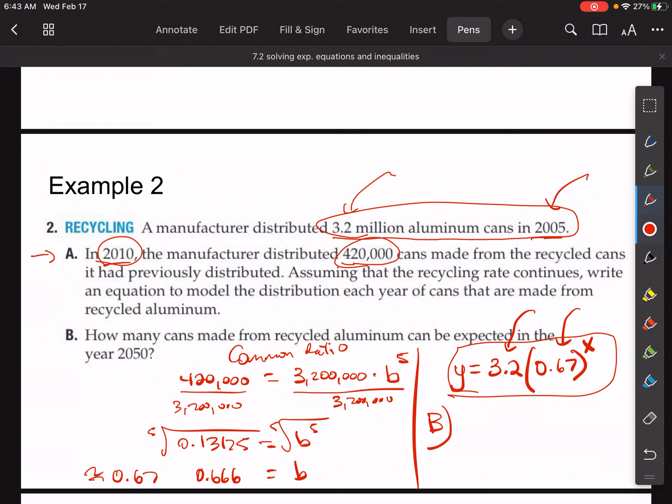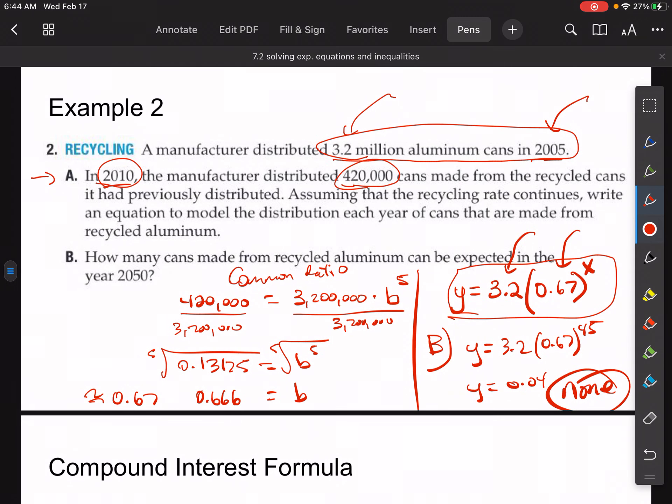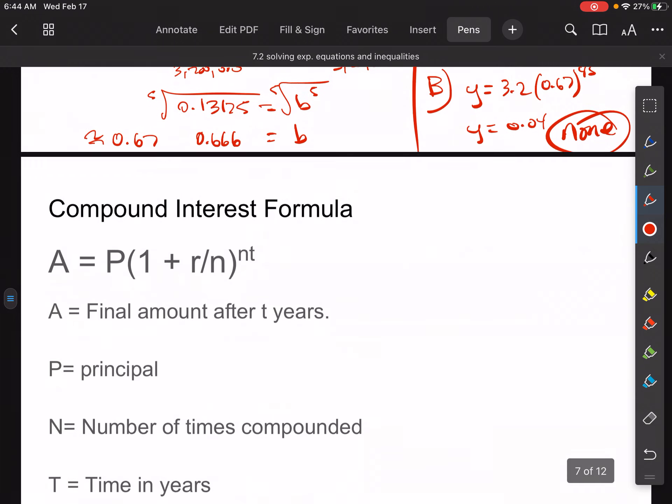Then it says in part B, tell us how many recycled aluminum cans we'll have by the year 2050. So 45 years go by. Let's see what happens. Y equals 3.2 times 0.67, all to the 45th power. And if you do that, I think you end up with like 0.04 or something like that. So we can say, essentially, that there's going to be like none. There's no more cans that are going to be recycled by 2050. Hopefully that's not the case. But we are seeing a decline in recycling right now for some reason, probably related to COVID. But hopefully this pattern is not the case, and we're going to see a lot more recycling done.